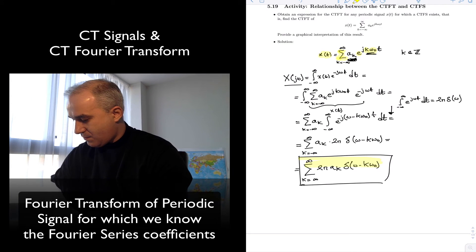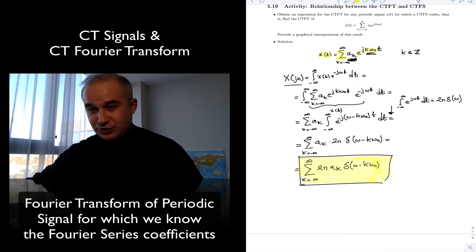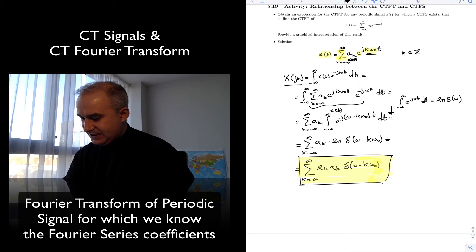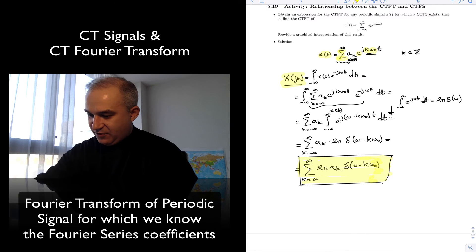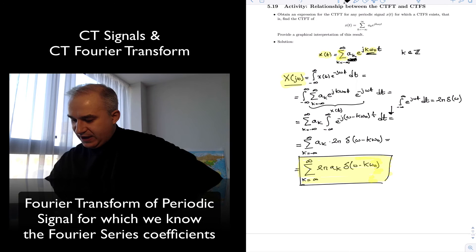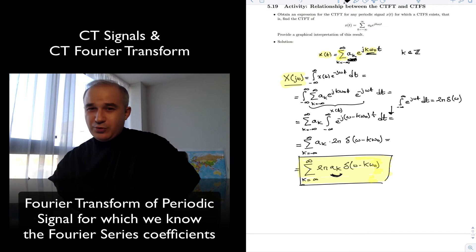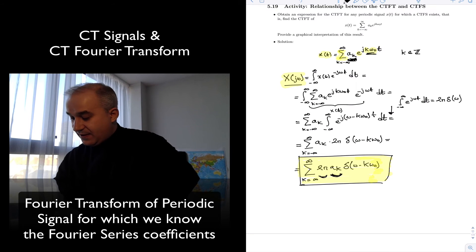Let's interpret it and see if this is what we expected. We expected to find, at each point where we had the spectral lines — which were the k·omega zero frequencies — an impulse. That's the first thing. And we expected a relationship between the Fourier coefficients and the ak coefficients. So what you have is: if you have the ak coefficients, you don't have to redo the continuous time Fourier transform. You multiply them times 2π, and then you have a spectral line at that frequency.